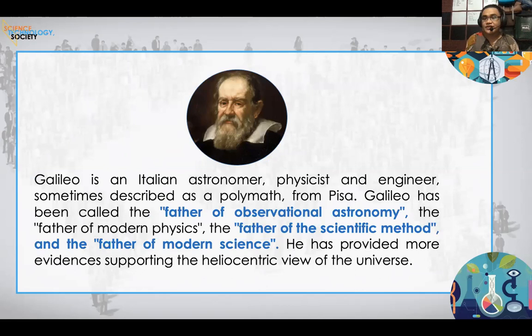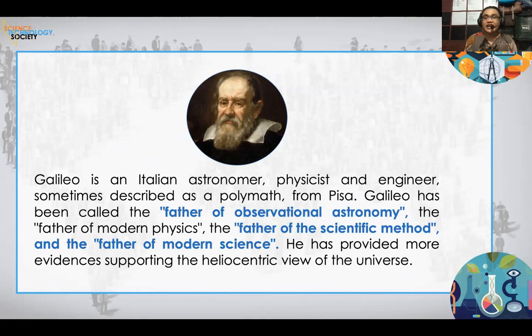Galileo is an Italian astronomer, physicist, and engineer — sometimes described as a polymath from Pisa. He has been called the father of observational astronomy, father of modern physics, father of scientific method, and father of modern science. He provided more evidence supporting the heliocentric view of the universe and is recognized as one of the three founding fathers of the scientific method. During this time, he was already using tools to enhance his observations.